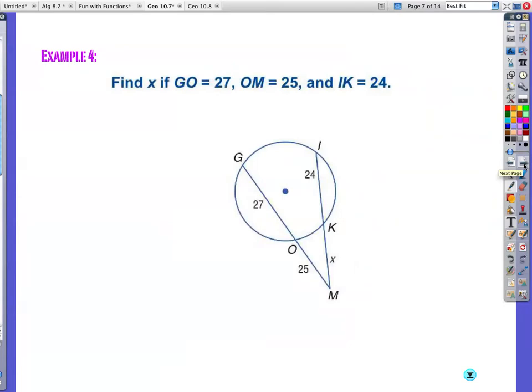Outside times the full length is equal to outside times the full length. Here we go again. Very similar, but watch out. Outside is x. The full length is not 24, it's not x, it's actually x plus 24. It's equal to the outside, which is 25, times the full length, which I believe is 52.